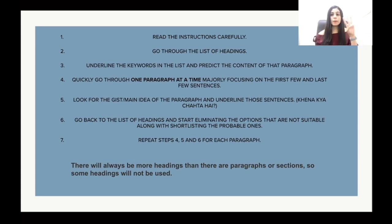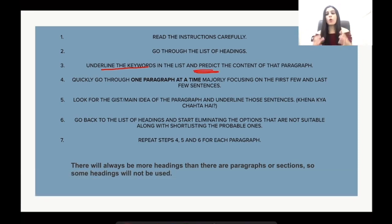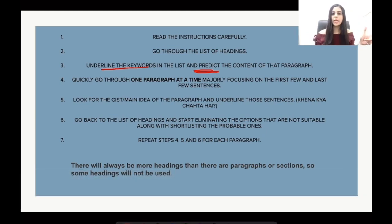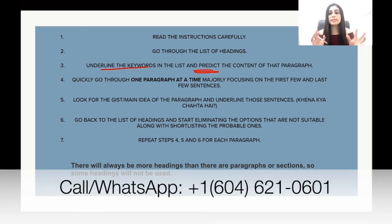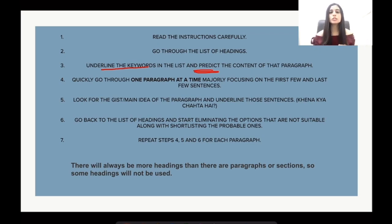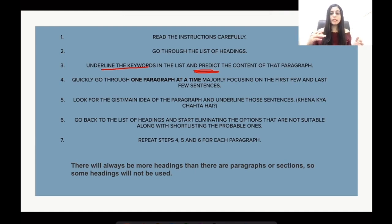Number three: underline the keywords in the list. There are certain keywords that you have to underline, and then predict the content of that paragraph — what could be the content of the paragraph which has that particular heading. This has to be done in two to three seconds. You don't have to think a lot, because when it comes to prediction, we are not guessing. There's a difference between guessing and predicting. Predicting is just trying to analyze or understand what could be the content of a paragraph with that heading.